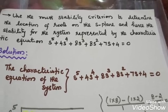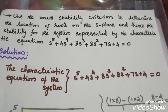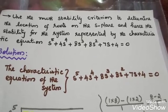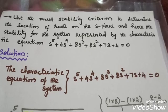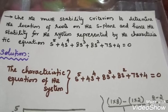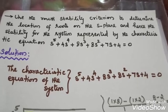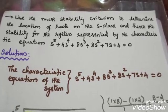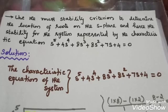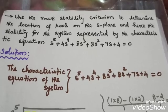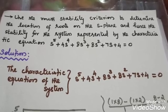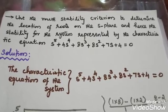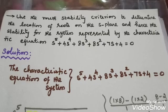How to do this? The Characteristics Equation is taken straight from this. If you use the Routh-Hurwitz criteria, how many roots are there? The system is stable, unstable, or marginally stable.